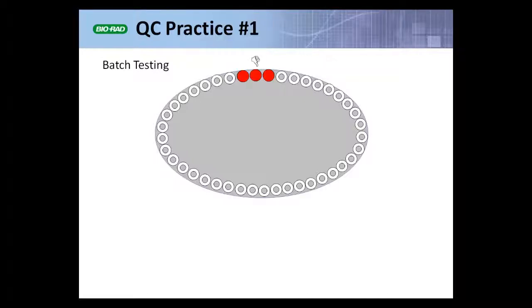Conversely, if the QC results were unacceptable, we assumed that whatever adversely affected those QC results also adversely affected the patient samples in the batch. There was a natural association between the QC results and the patient results in the batch.